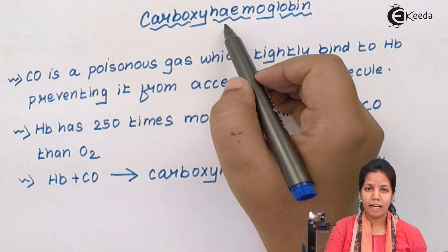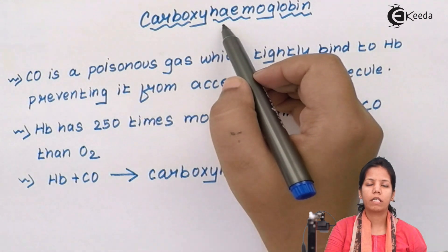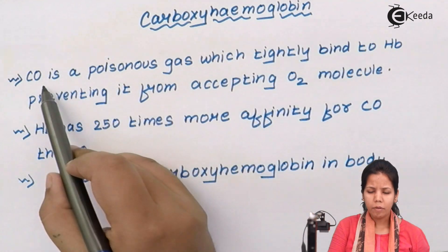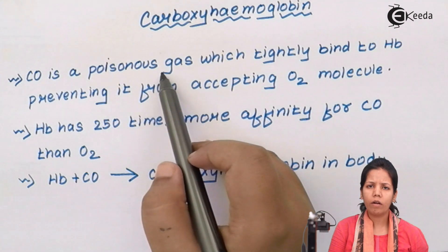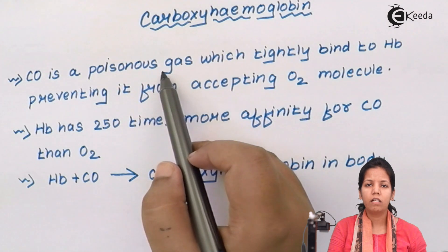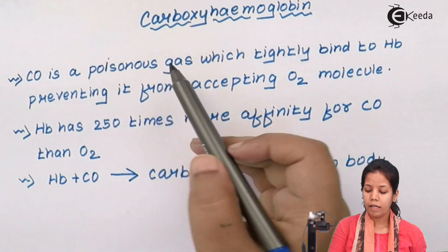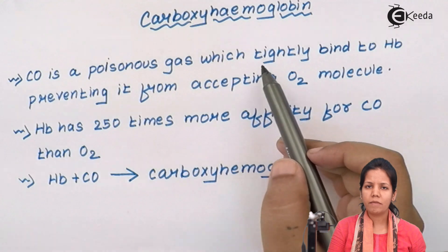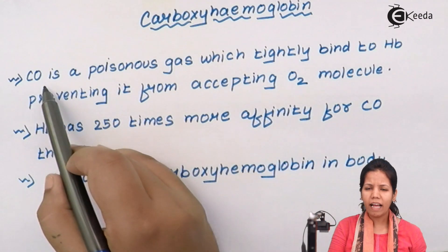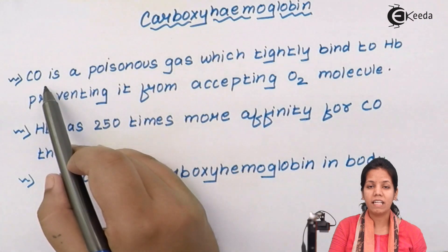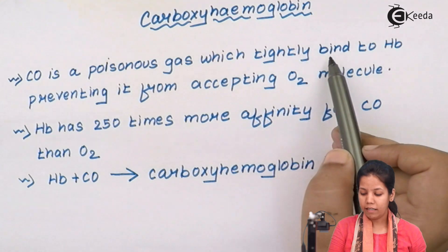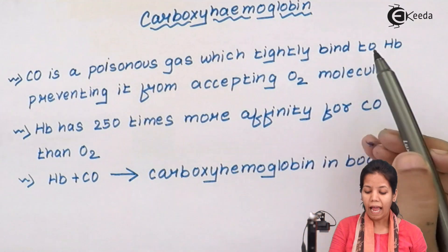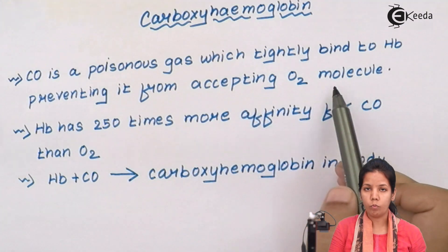Carboxyhemoglobin is a deadly product formed inside the body whenever carbon monoxide (CO) is present. Carbon monoxide is a poisonous gas released as a waste material especially due to the burning of diesel, petrol, and from industries. If an individual is present in the vicinity of carbon monoxide, there are chances that this gas can gain entry inside that individual's body. This poisonous gas binds tightly to hemoglobin, preventing it from accepting oxygen.